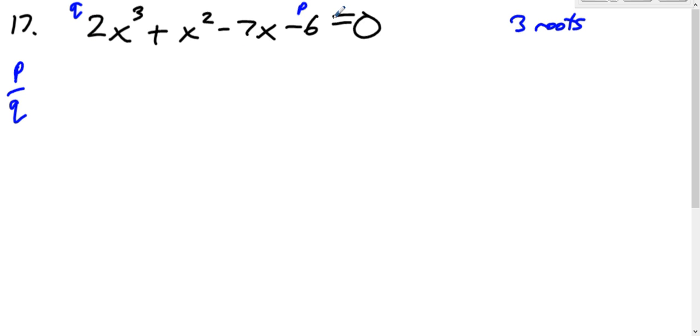So we take all the factors of p, so negative six, things that go into that. All the factors are one, two, three, and six, and it could be divided by a positive or a negative, so it's plus or minus one, plus or minus two, plus or minus three, plus or minus six.